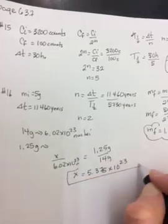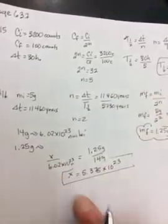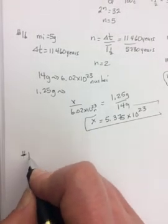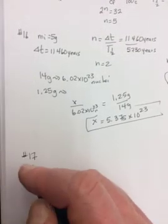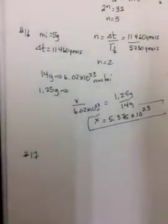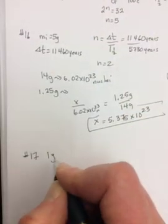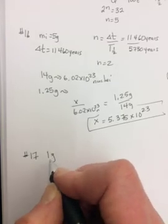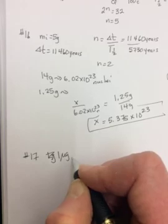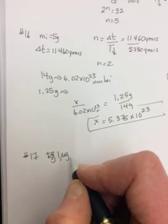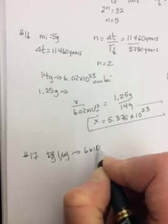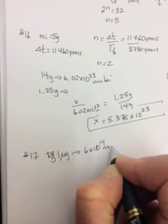Now, I would never do something like this to you. This part, definitely, but I wouldn't make you do the ratio like that. Okay? And number 17 says, a 1-gram sample of a radioactive material contains 6 times 10 to the 14th nuclei.